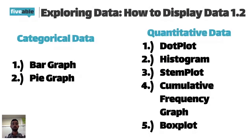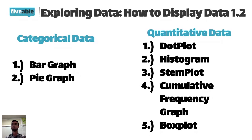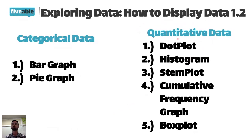For categorical data, we have bar graphs and pie graphs — those are the two big ones in AP Stat. However, you really won't see a categorical data question on the AP exam; I can't tell you the last time I saw a bar graph or pie graph as a free response question. The AP test tends to focus on the quantitative side, because you can simply do more with quantitative variables. Categorical variables kind of limit your ability to analyze.